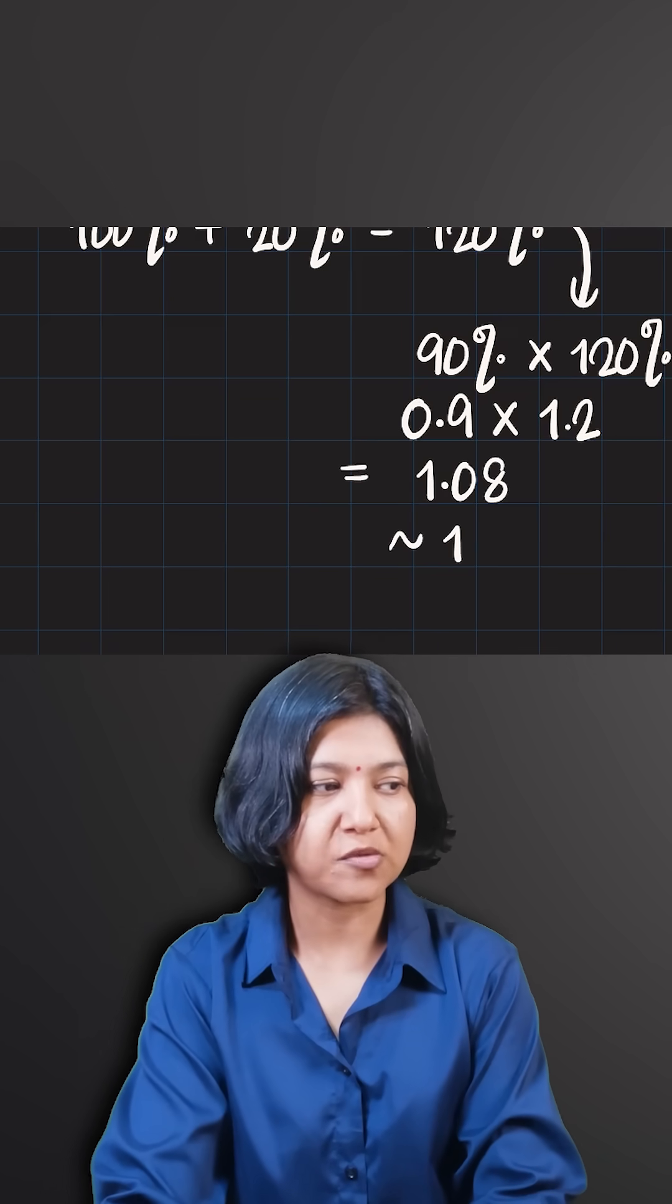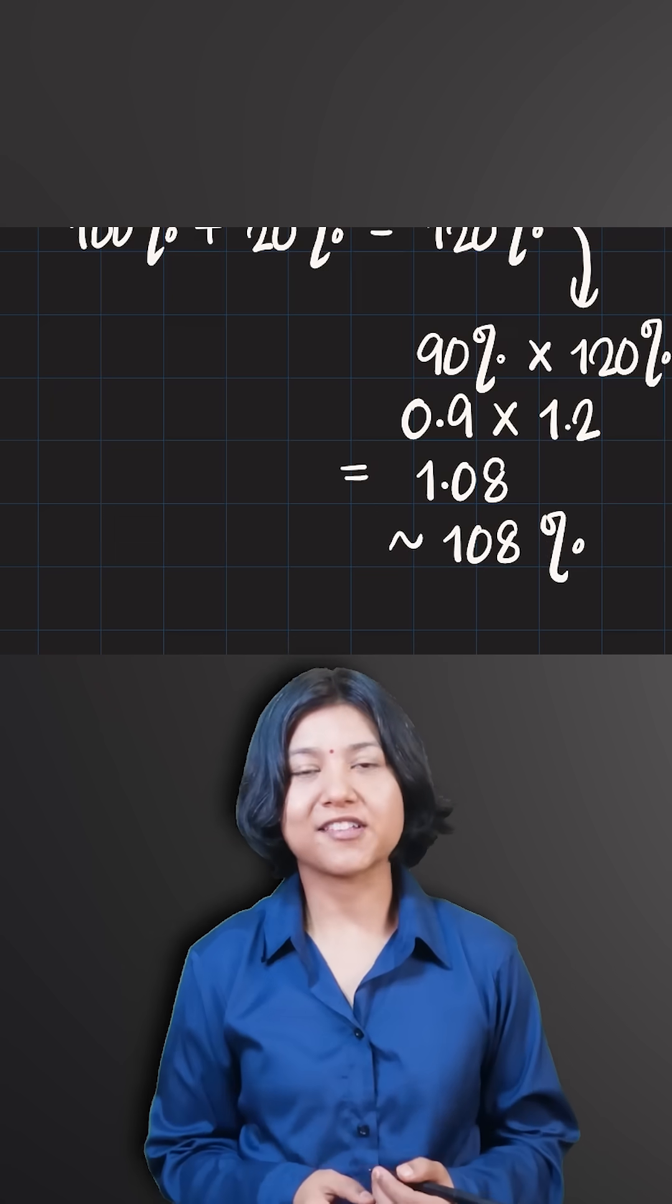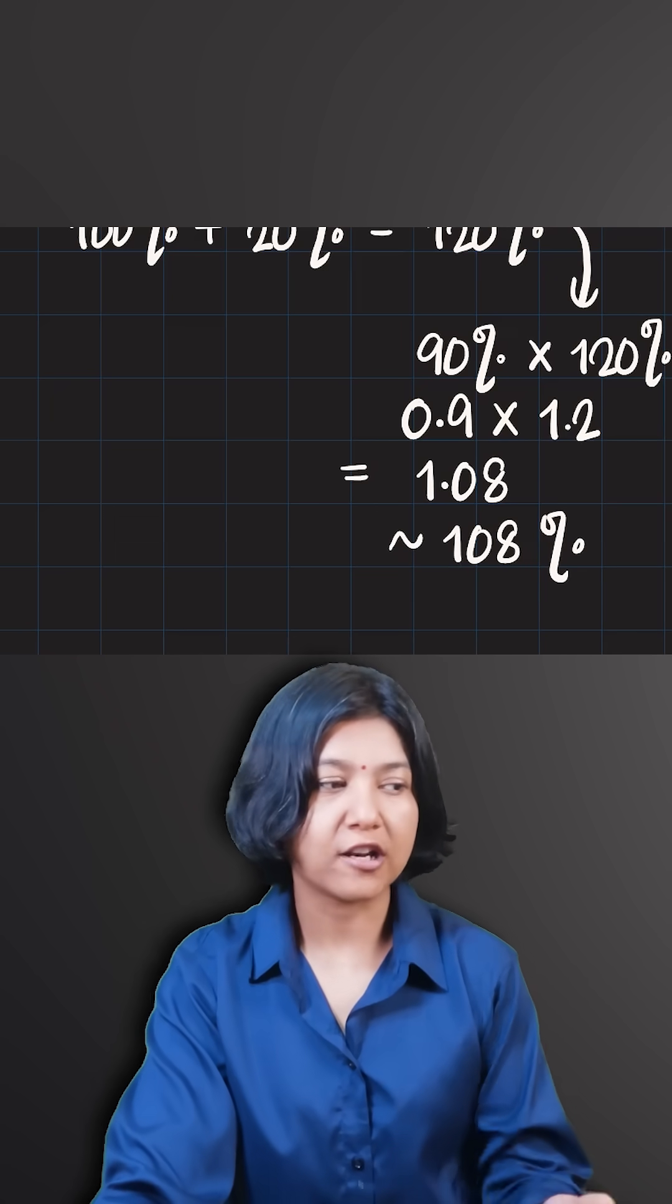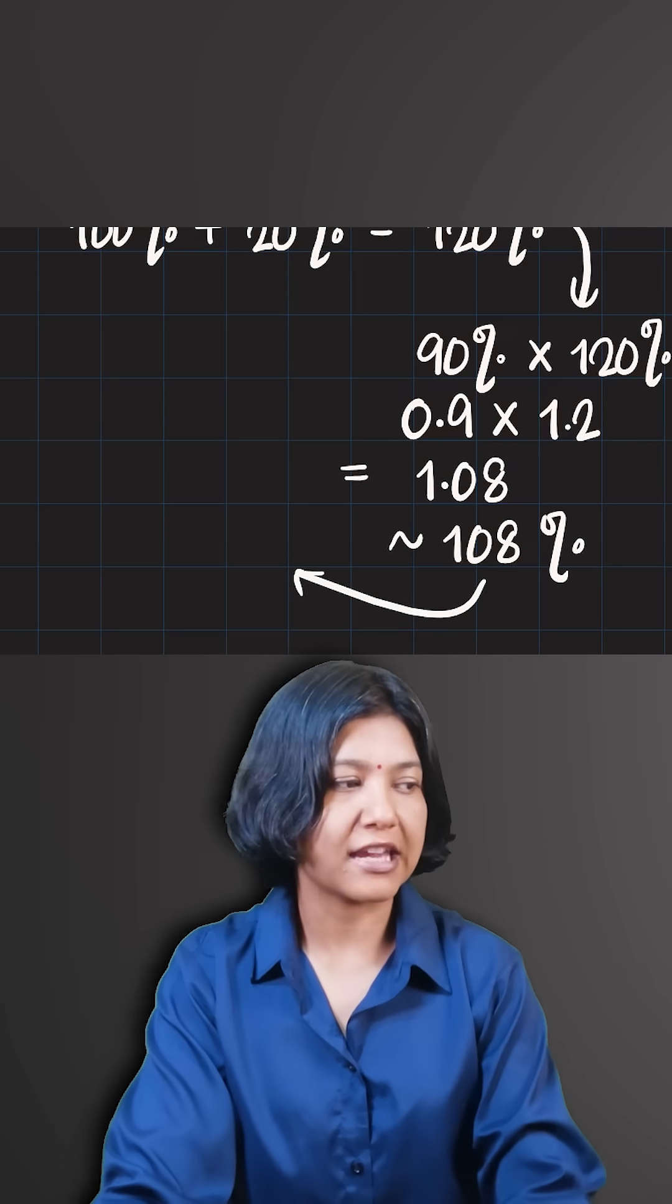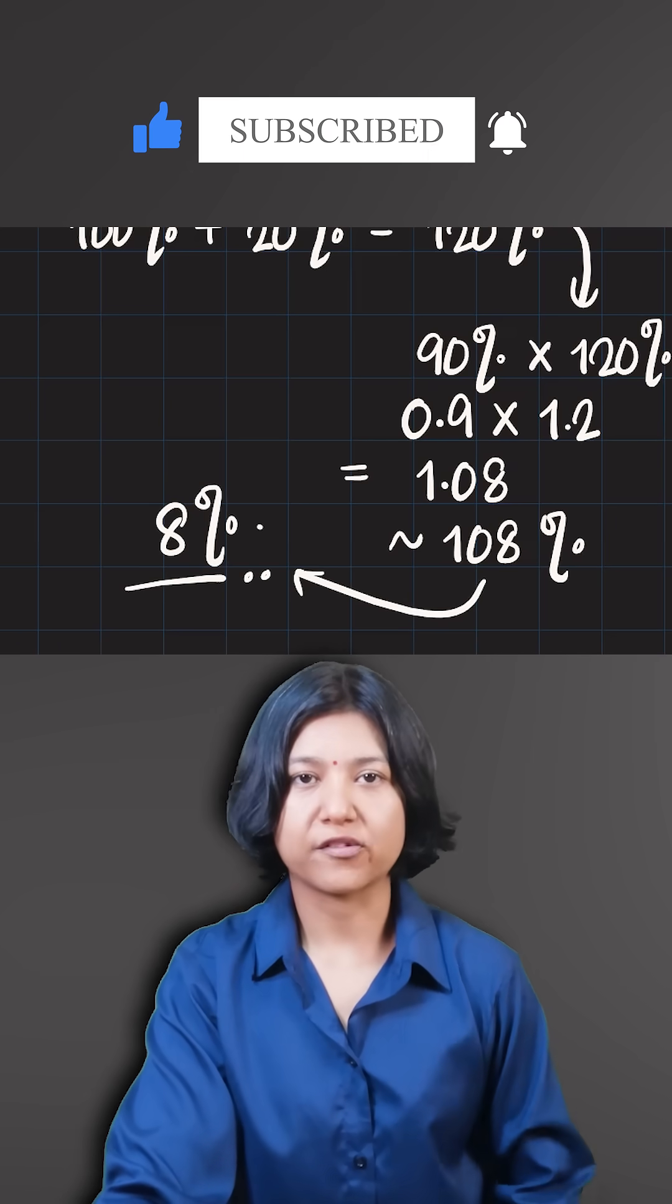As a percentage, this is 108% which means remember you were only paying 100%. So because it's more than 100% now, we see that he has gained overall. How much is he gaining? The answer is 8% because remember you started at 100%. So this is 8% profit.